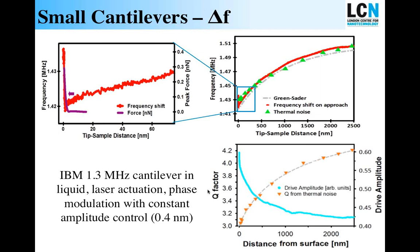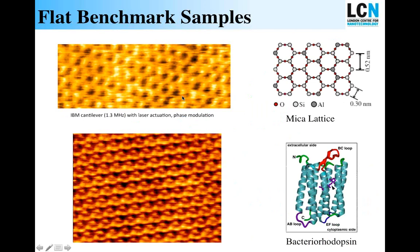The next step is to do some testing on flat samples. Here I show two standard flat benchmark samples: atomic resolution on muscovite mica using a small cantilever with laser actuation, tracking the resonant frequency; and the cytoplasmic side of the purple membrane, showing individual bacteriorhodopsin molecules. This is brilliant, but achieving atomic or molecular resolution on flat samples is now achievable on a large majority of equipment. So the next step is to add in the height fluctuations that we often find in biological samples, and we've chosen DNA as a representative benchmark.